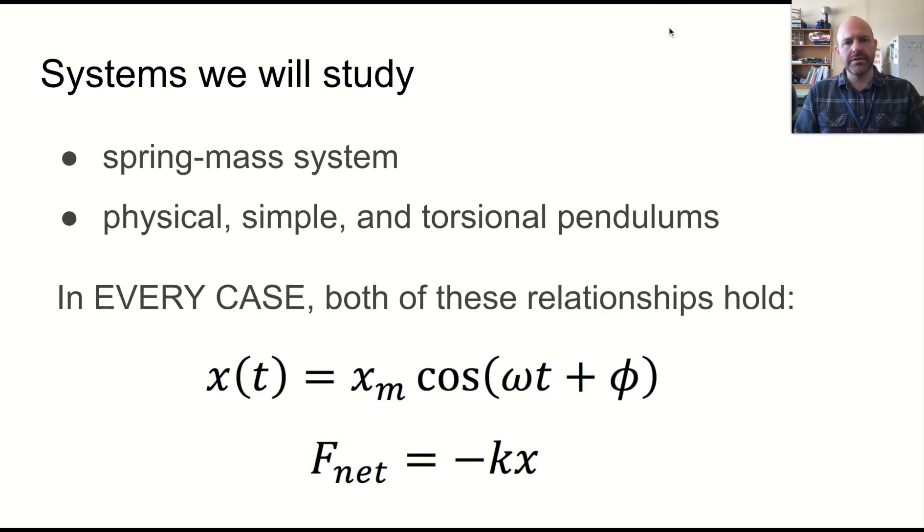Now, we're going to look at two, well, really three systems if you count torsional pendulum. But really, the mass spring system is our model. And then everything else, we kind of go from there. But in all cases, we have this motion that can be described along a single axis as x as a function of time is some maximum amplitude times the cosine of omega t plus phi. And that the net force behaves like negative kx.